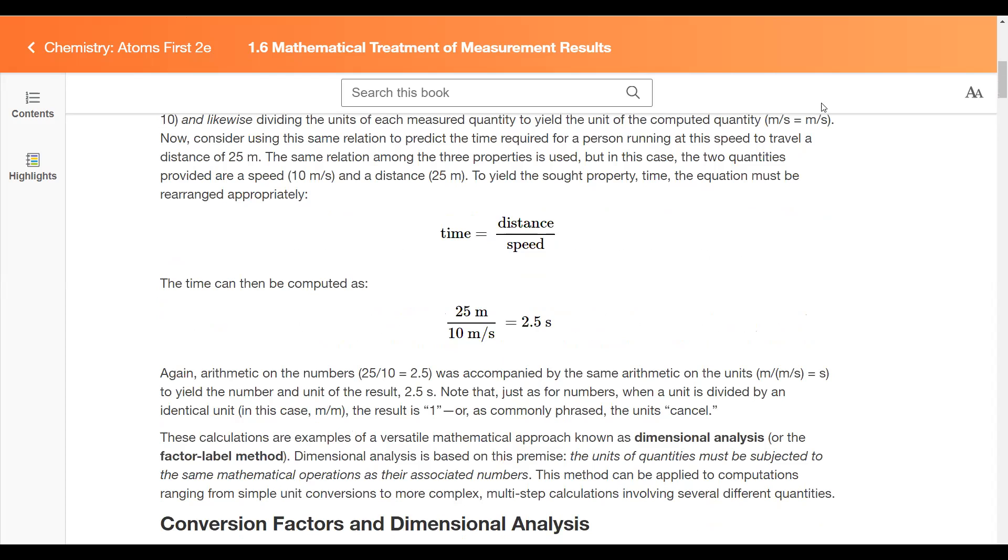We can also take that equation and rearrange it for solving for time if we're given the distance and speed. In any equation that relates three quantities, if we know two of them, we can solve for the third. If we knew the time and the speed, we could solve for distance, which would be time multiplied by speed. The units for time would be seconds, and for speed meters per second. Seconds cancels out and gives us meters. As long as we're able to keep track of our units, we can make sure that we've done the proper calculations.